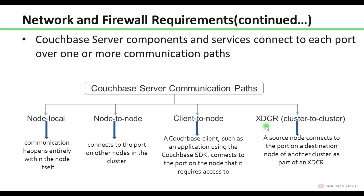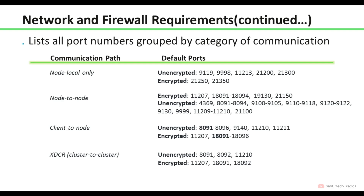XDCR will be discussed later in detail. When configuring XDCR, there are a few port numbers that must be opened; otherwise you will see an error stating that a certain port is not open. The list of all port numbers is grouped by category of communication. Node-to-local uses these port numbers — both unencrypted and encrypted. Some organizations only allow encrypted ports and SSL communication, so you have to open those accordingly. Node-to-node communication has its own encrypted and unencrypted ports. Similarly, client-to-node and XDCR each have their respective unencrypted and encrypted port numbers.